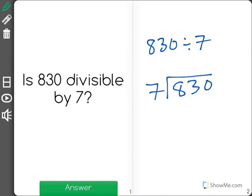830 divided by 7. 7 goes into 8 one whole time, then I multiply 1 times 7 to get a total of 7, finding out that I had 1 hundred left over.